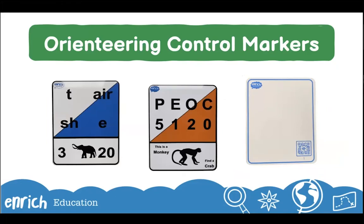Control points on an orienteering course are marked by special orienteering markers. The first two markers shown have pictures and sequences of numbers and letters and would be fixed in place around the school site as part of a permanent orienteering course. The third marker on the right is different — it wouldn't be fixed in place and could be put at any location around the school site or even within the school building. Its locations can be marked on a customizable orienteering map, and information can be drawn, stuck on, or written on it, and it also utilizes QR code technology.